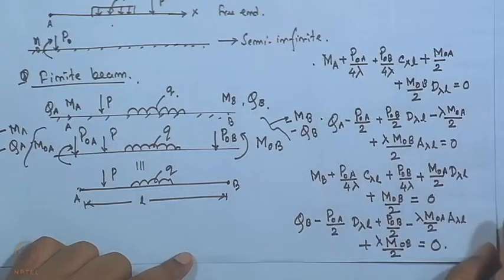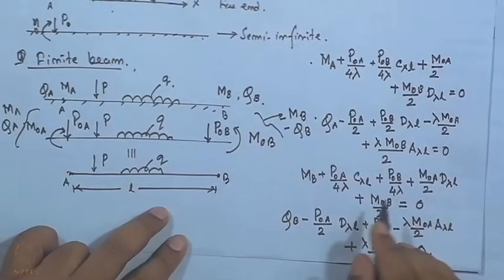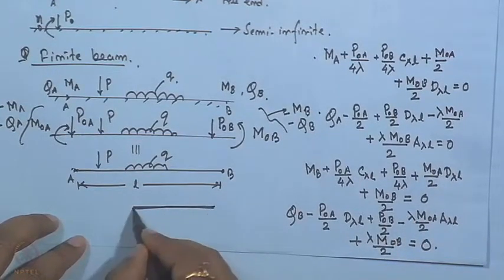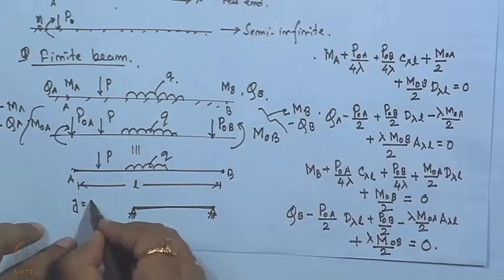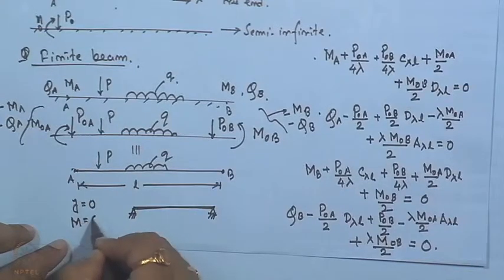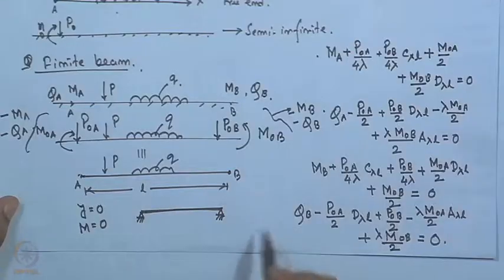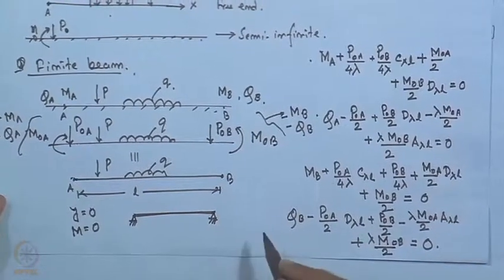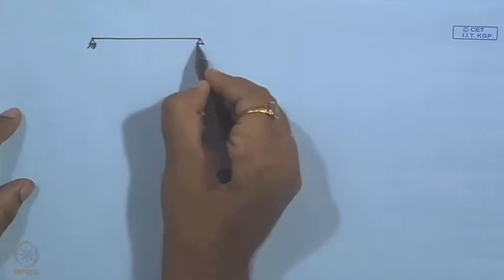To solve these four expressions, we need to use two boundary conditions. For example, if it is a hinged beam with finite length, one boundary condition is deflection at both ends is zero, and another is moment at both ends is also zero. Depending on the loading and end condition, we will get similar boundary conditions.